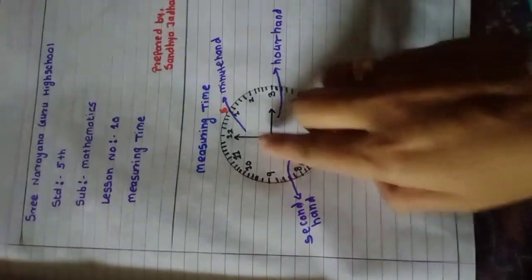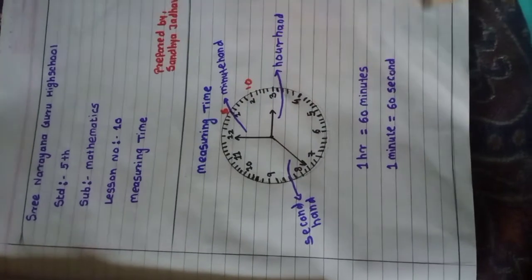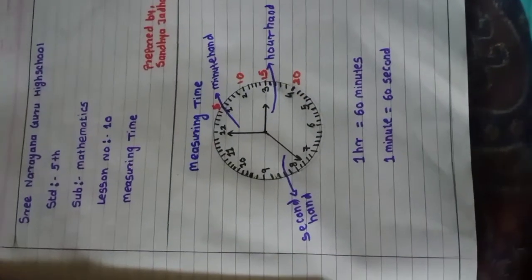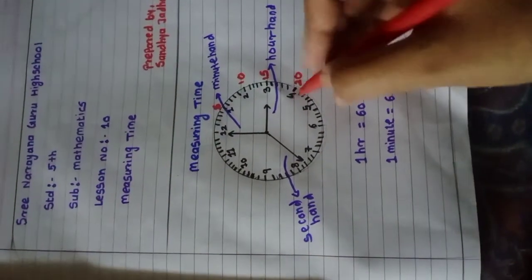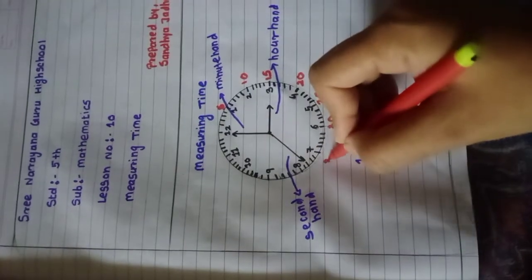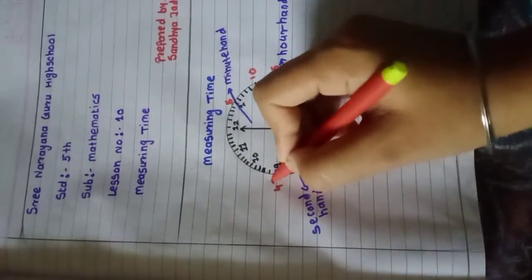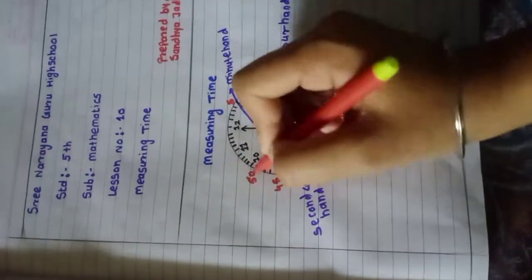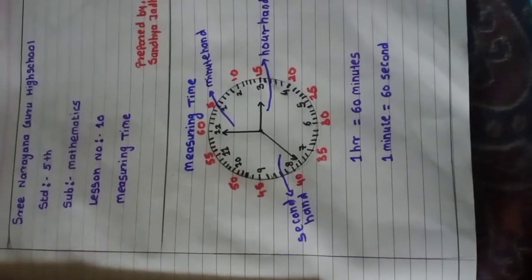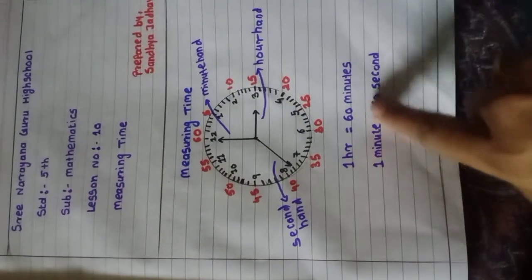Then 1 to 2, again you can see 5 lines, so 10 minutes. Then 2 to 3 is 15 minutes. 3 to 4 is 20 minutes. You have to learn that 5's table. Then 4 to 5 is 25 minutes. 5 to 6 is 30 minutes, 6 to 7 is 35 minutes, 7 to 8 is 40 minutes, 8 to 9 is 45, 9 to 10 is 50, and 10 to 11 is 55. When we reach to the 12, it is 60 minutes. That is why 1 hour is equal to 60 minutes.